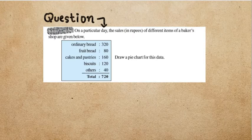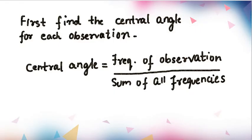Draw a pie chart for this data. In order to draw the pie chart, you have to first find the central angle for each observation. The formula is: central angle equals frequency of observation divided by sum of frequencies.